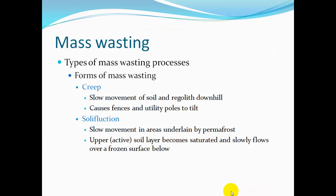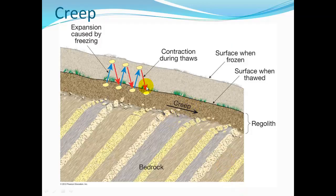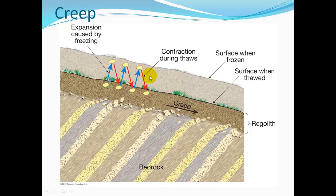Another form is creep — very slow movement of soil downhill. It causes fences and utility poles to tilt. Creep is caused by freezing and thawing: when the soil surface is frozen, moisture turns to ice and takes up more volume, so the surface of the land rises. When it thaws, the surface falls. Particles travel incrementally downslope with each freeze-thaw cycle. Solifluction is slow movement in areas underlain by permafrost, like Alaska, where the surface thaws, becomes saturated, and slowly flows over the frozen layer beneath.